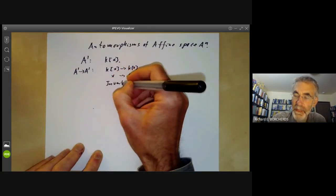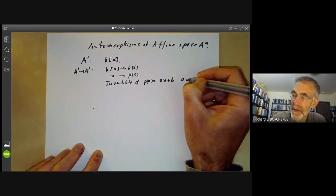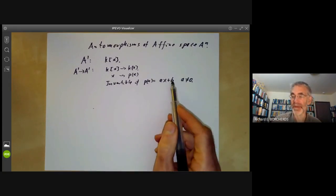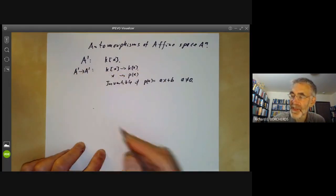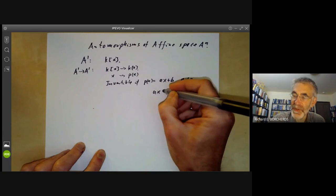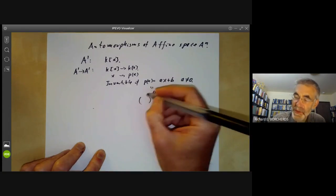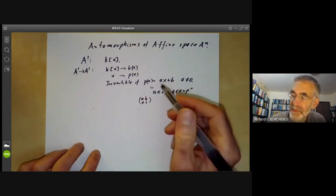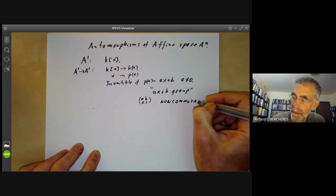We want to ask which of these are invertible. Well, that's pretty obvious - it's invertible if p(x) equals ax + b with a non-zero. So it's completely easy to check that these things have inverses and nothing else does. The group of automorphisms of one-dimensional affine space is the so-called ax + b group for fairly obvious reasons. It's non-commutative as you can easily check.